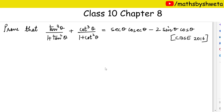We will have to prove: tan³θ upon 1 plus tan²θ, plus cot³θ upon 1 plus cot²θ, which will be equal to secθ cosθ minus 2 sinθ cosθ.